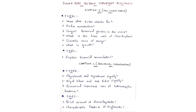Chapter 1: The Living World. VSAQs: what does ICBN stand for; define metabolism; largest botanical garden in the world; what is the basic unit of classification; scientific name of mango; what is growth. For short answer questions, the most important one is: explain binomial nomenclature. Long answers are not very much necessary in this first chapter.